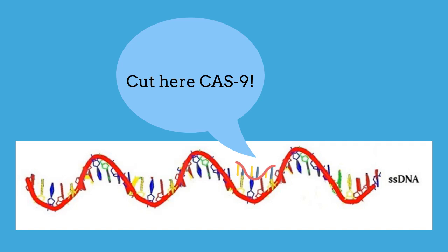Once the DNA is cut, researchers use the cell's own DNA repair machinery to add or delete pieces of genetic material, or to make changes to the DNA by replacing an existing segment with a customized DNA sequence.